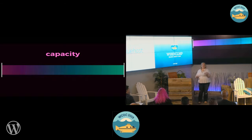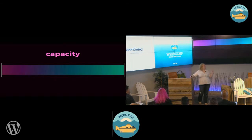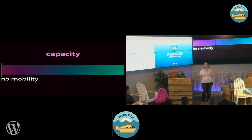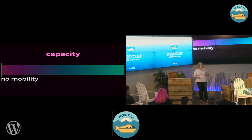If we look at physical capacity, on one end of the spectrum we would have somebody who had no mobility — someone like the author of The Diving Bell and the Butterfly, who wrote an entire book by blinking his right eye because that was all he could move. And at the other end of the spectrum...